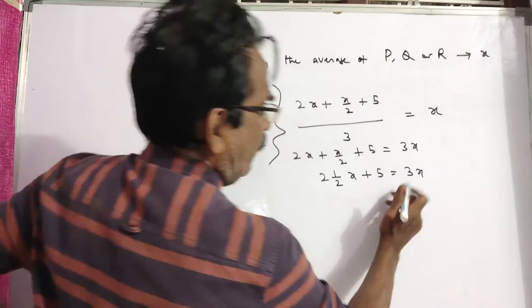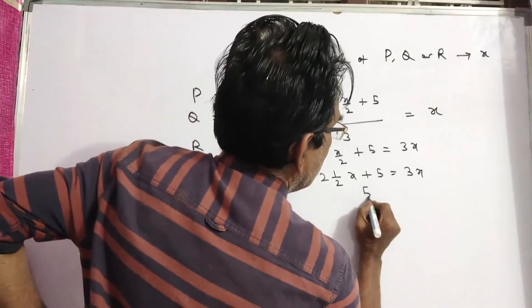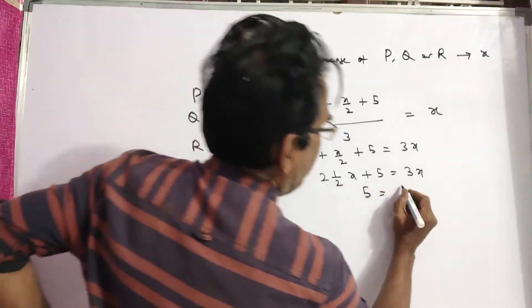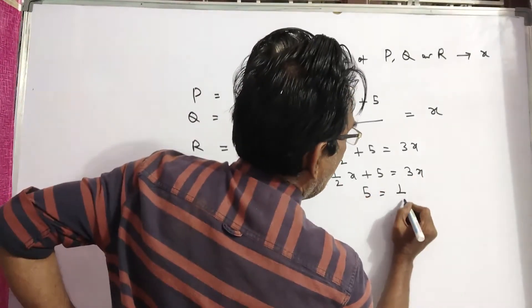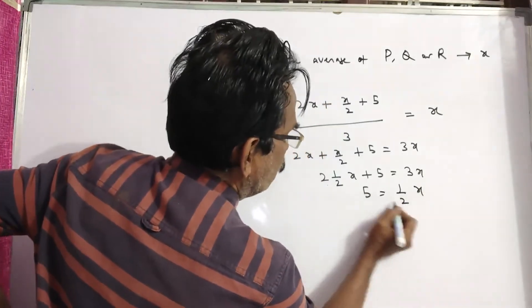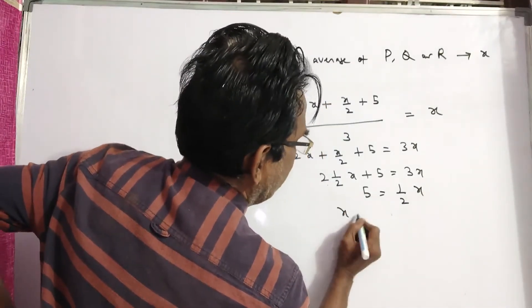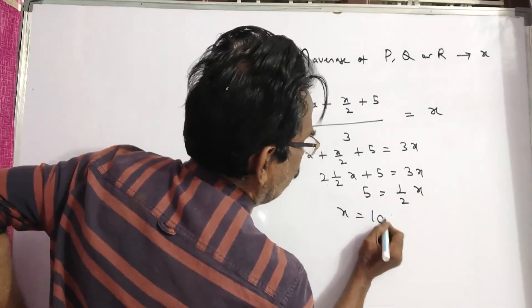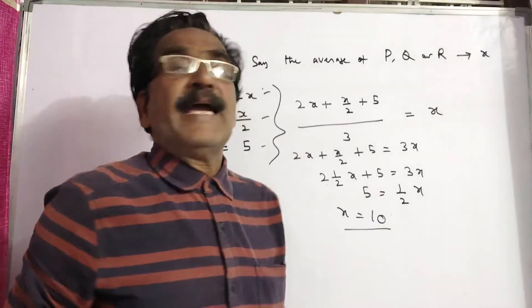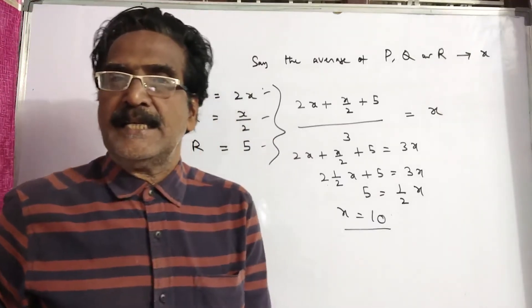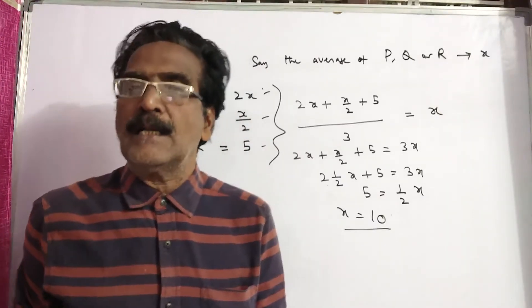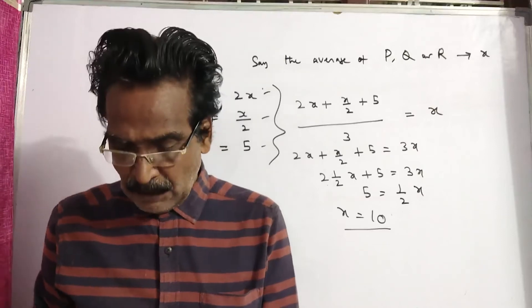3X minus 2 and a half X gives half X. So X is equal to 10. The average age of P, Q, R is 10.